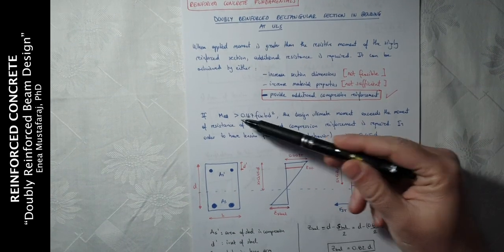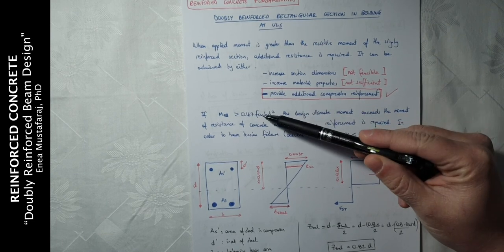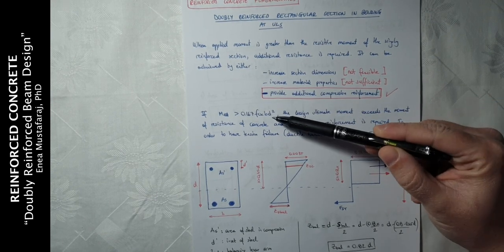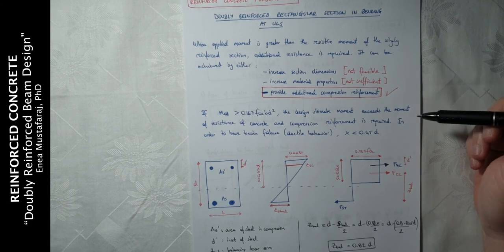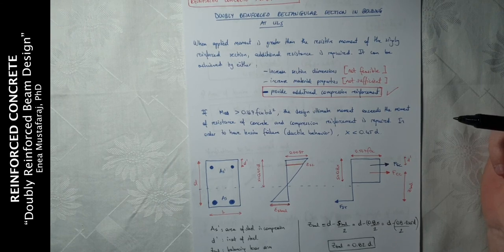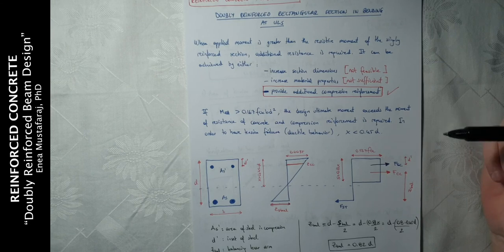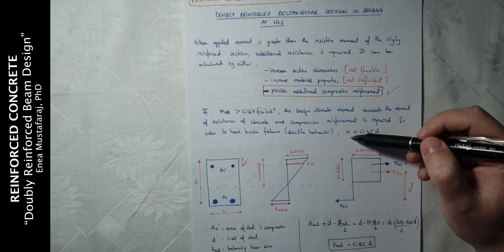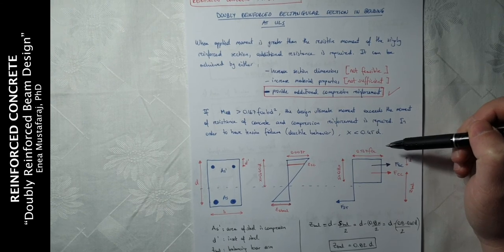If the design moment is bigger than 0.167 times the compressive strength of concrete times width times effective depth squared, the design ultimate moment exceeds the moment of resistance of the concrete and compression reinforcement will be required. In order to have a tension failure, or a better ductile behavior, the depth of the neutral axis should be less than 0.45d.